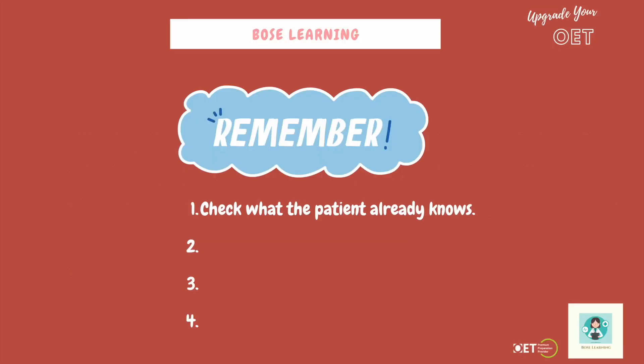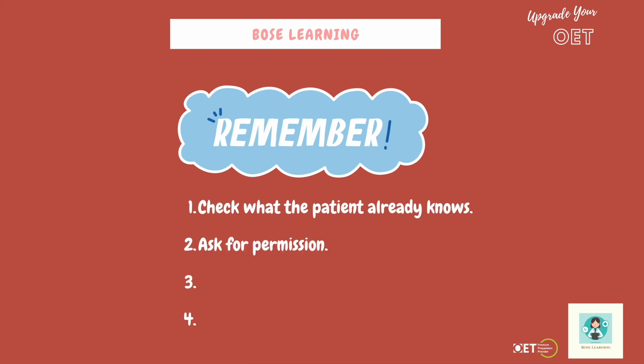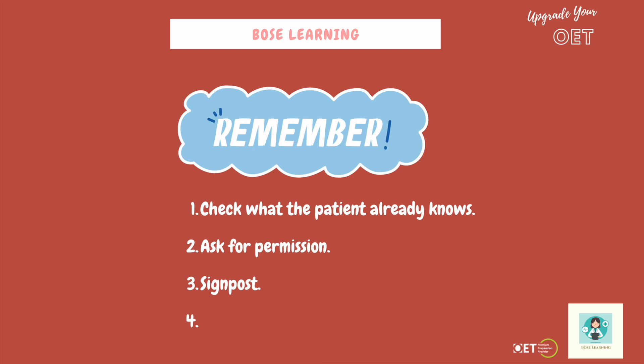Remember in your OET role plays: always check what the patient knows already — do they know what back strain is? Ask for permission: 'Is that okay if I organise a physical examination for you?' Signpost — tell them you're moving on: 'Shall we look at what happens next?' or 'Let's look at some recommendations.' And don't forget to pause to give the patient time to understand what you're saying, take it all in, and to allow them time to ask questions.